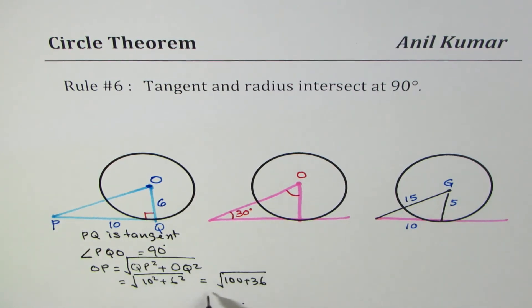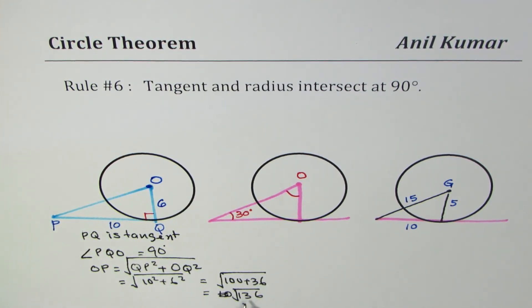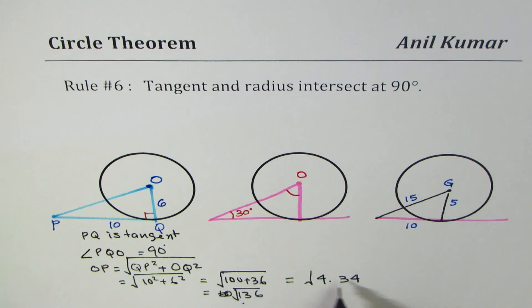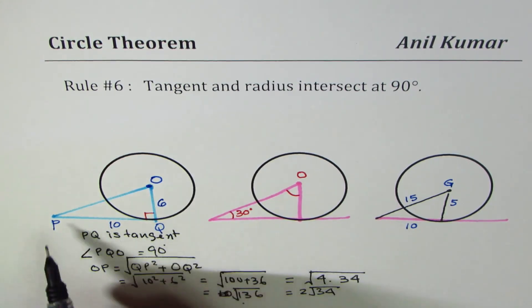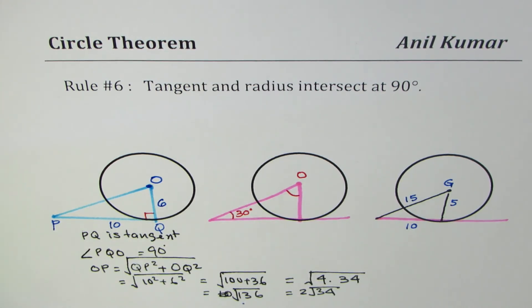136 can be divided by 4. When you divide this by 4, you get 4 times 34. So what we get is 2 square root 34 as the length OP. You can always use the calculator to figure this out, but I didn't really do it since many times calculator is not allowed for such questions. So we write this as 2 square root 34.